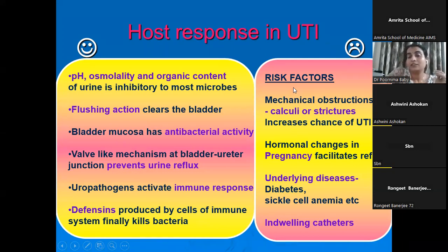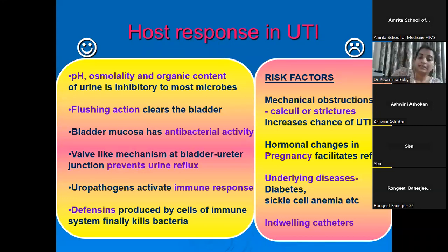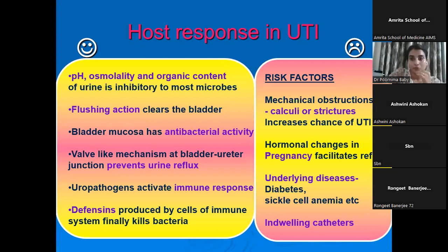What are the risk factors for UTI? Mechanical obstructions like calculi or strictures increase the chance of UTI. In women, pregnancy and hormonal changes can predispose to UTI. Underlying conditions like diabetes, sickle cell anemia, indwelling catheters, or multiple instrumentation or catheterization can also predispose the individual to UTI.